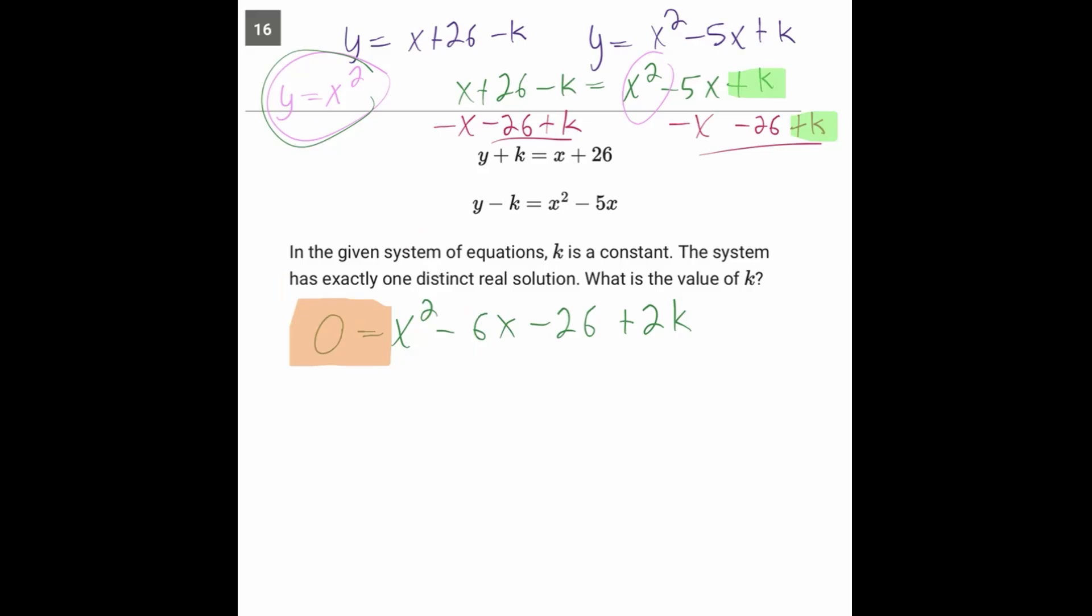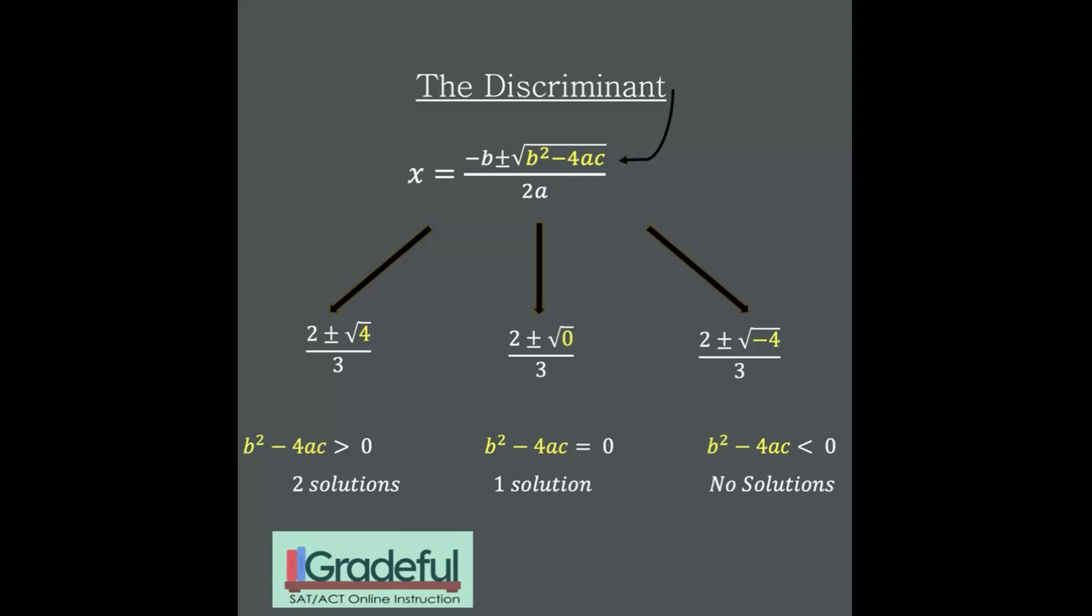Now you need to ask yourself, what piece of information have we not used yet? And that's this one right here. There's one solution. And the number of solutions in a quadratic situation is a code for something super important on the SAT. And that's the idea of the discriminant.